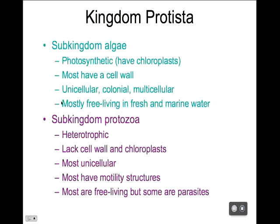Now let's talk about sub-kingdom Protozoa. Protozoans are heterotrophs — no photosynthesis. They ingest or absorb their food and don't have chloroplasts. They are all unicellular. Most have some sort of motility structure — either a flagella or cilia. Most are free-living, but there are some parasites, and we'll look at a couple of examples of parasites that can cause infections in humans.